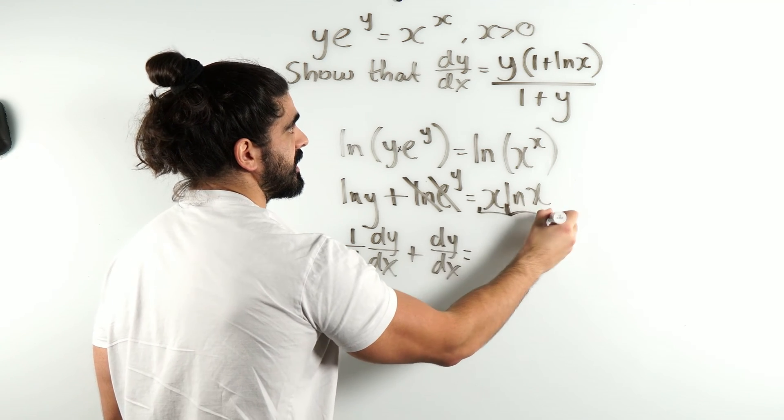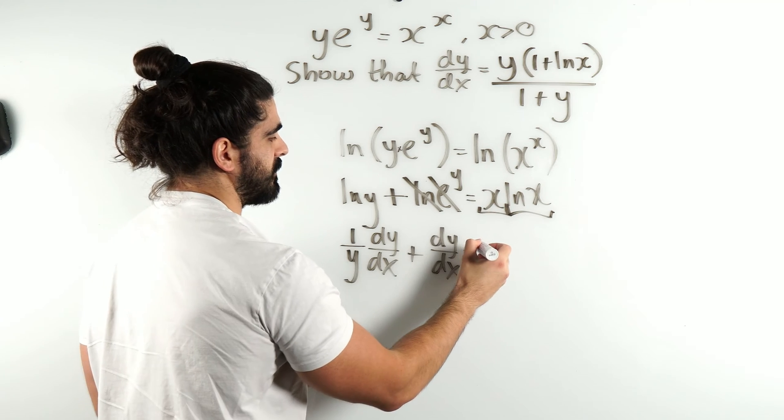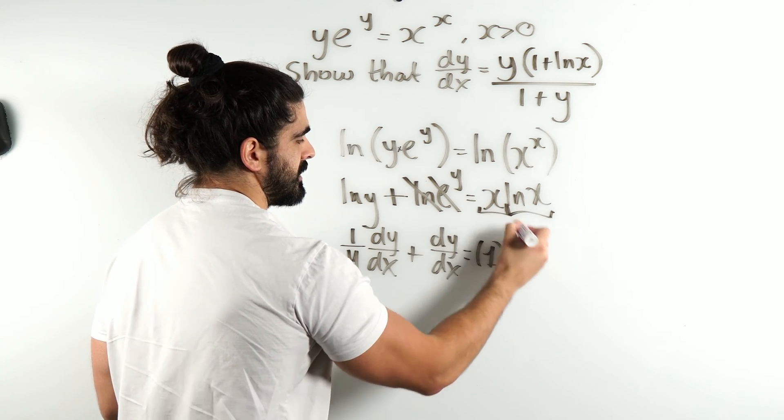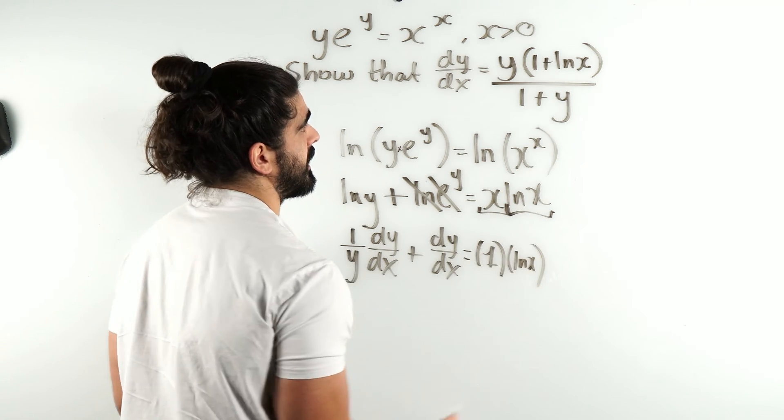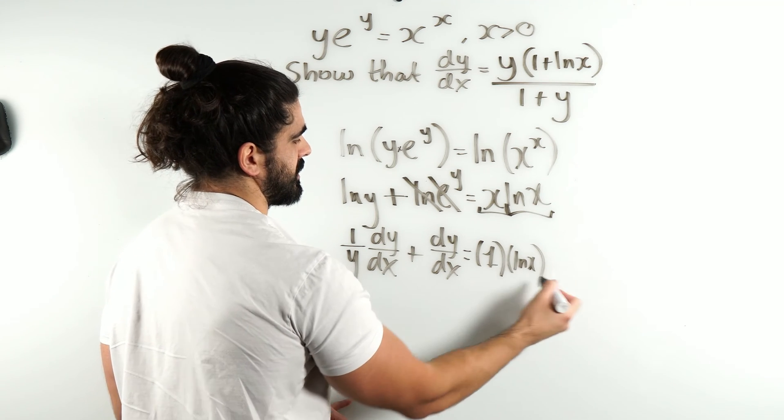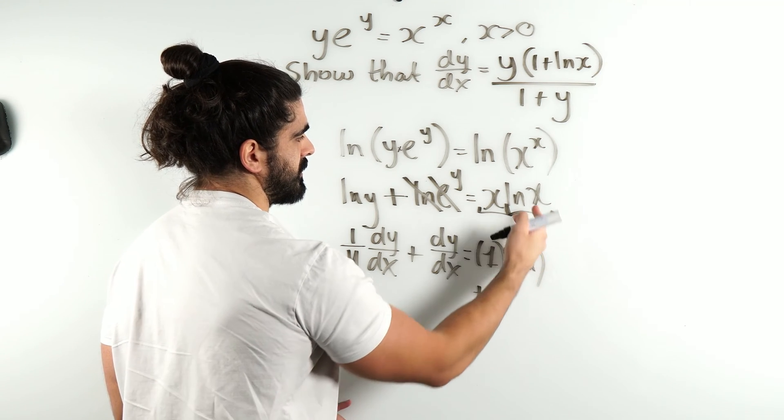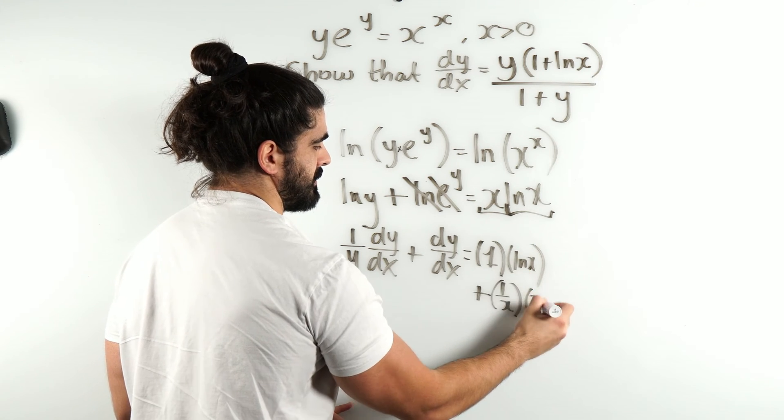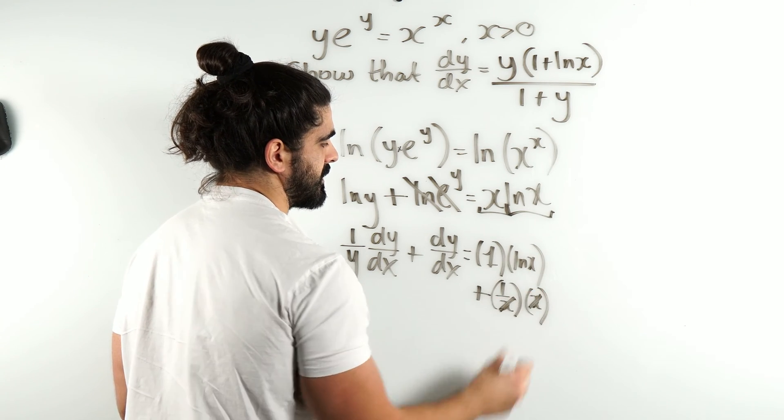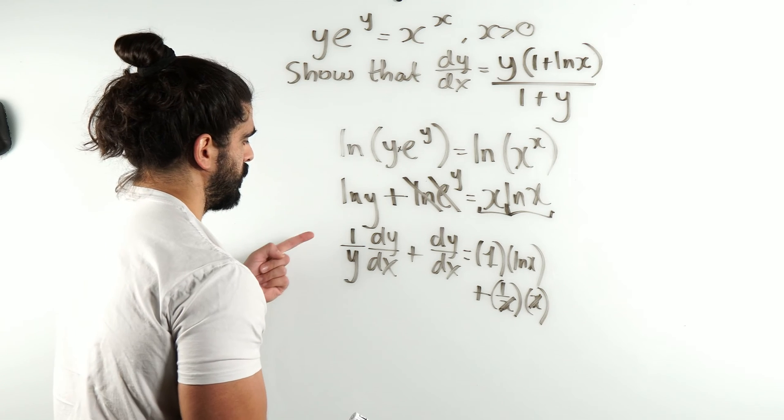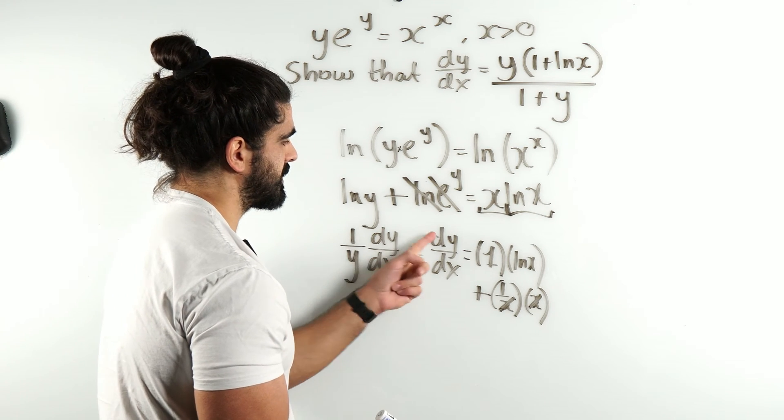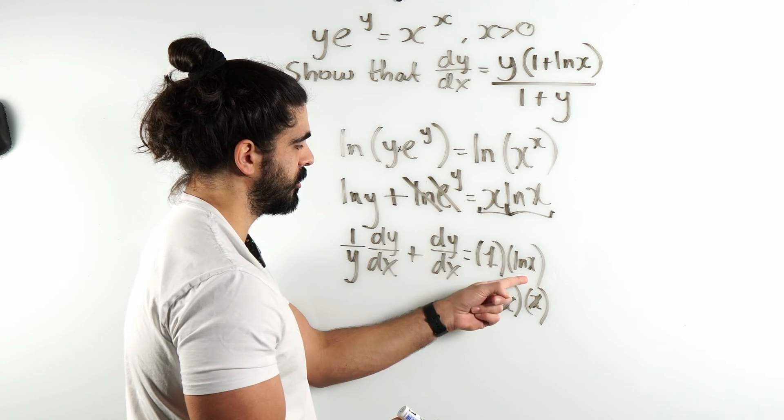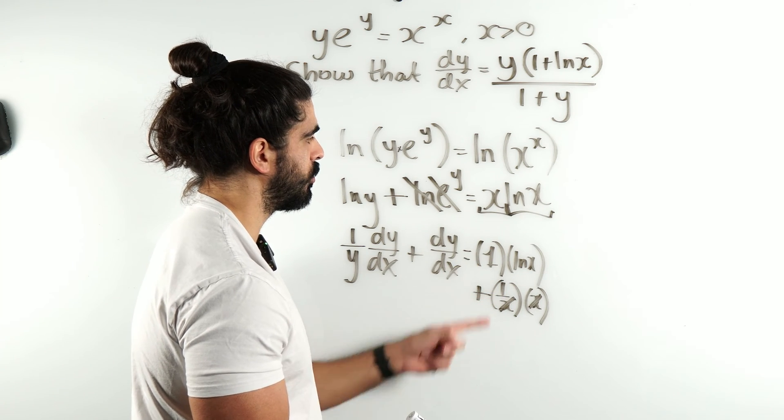Here, differentiating this is product rule. Differentiate the first term, 1, times the second term, x. We're going to run out of space on this side. And plus, differentiate the second term, 1/x, times the first term, x. These cancel. So we're left with 1/y dy/dx plus dy/dx equals ln(x) plus 1.